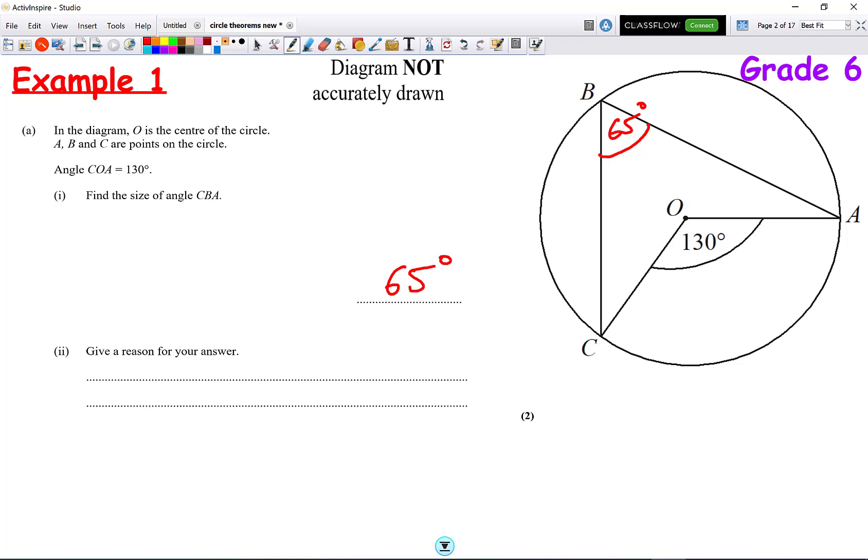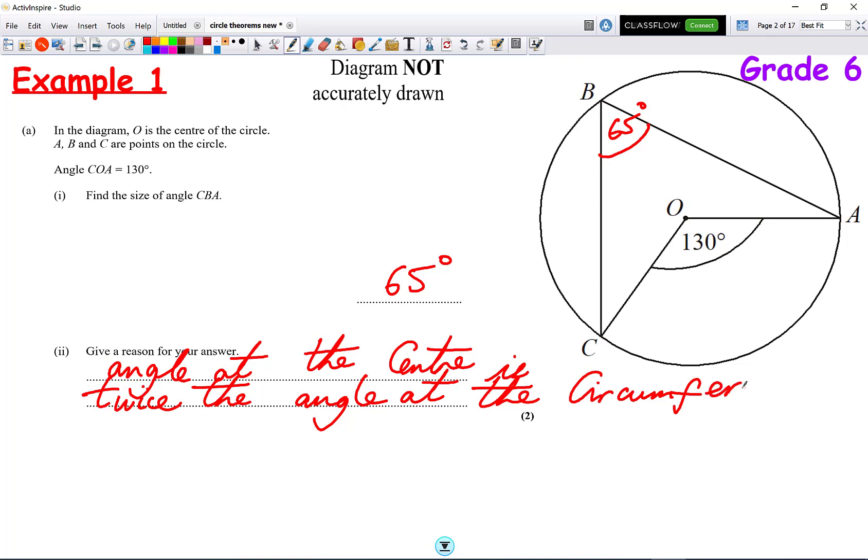Now, this is very important. Give a reason for your answer, and it must be stated in this way. The angle at the centre is twice the angle at the circumference. Do not change the reason. Do not alter it. It must remain exactly how it is. It must be stated in that way.